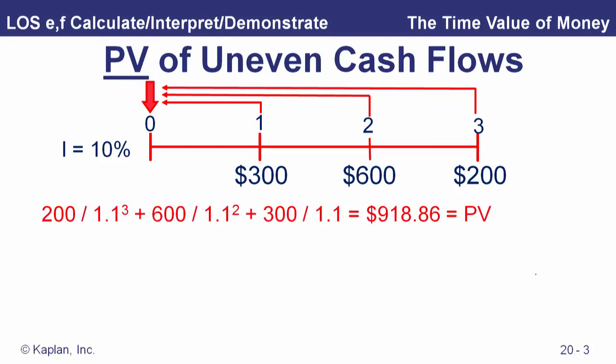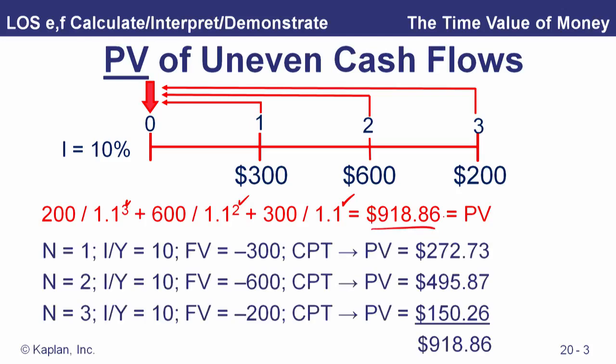The idea is the same: we take the present value of each of the three cash flows and add them all up to get $916.86. We discount the $200 for three periods, the $600 for two periods, and the $300 for one period, then sum them all up. Those are the calculator strokes for calculating those present values.